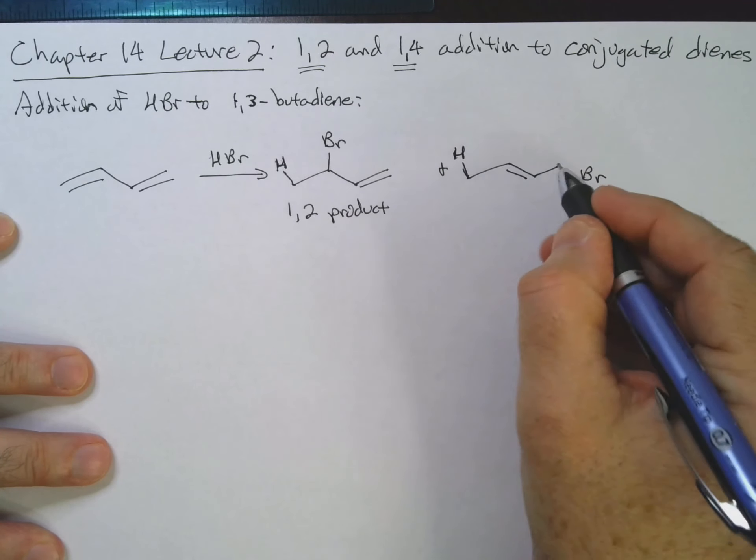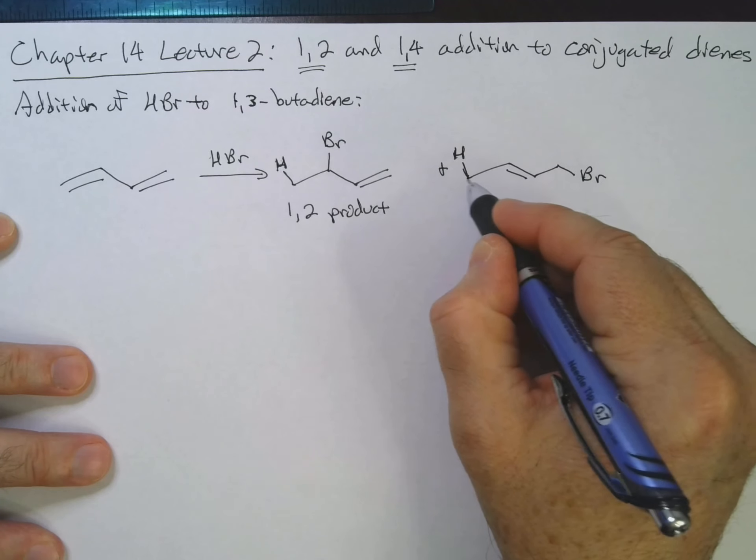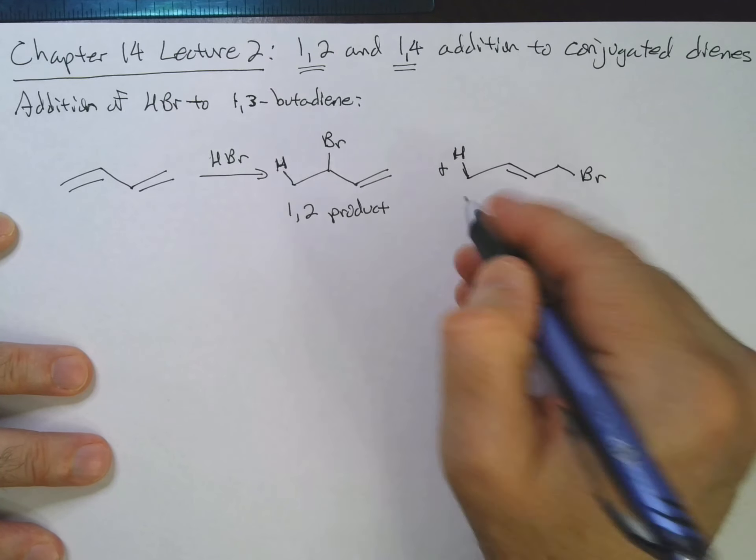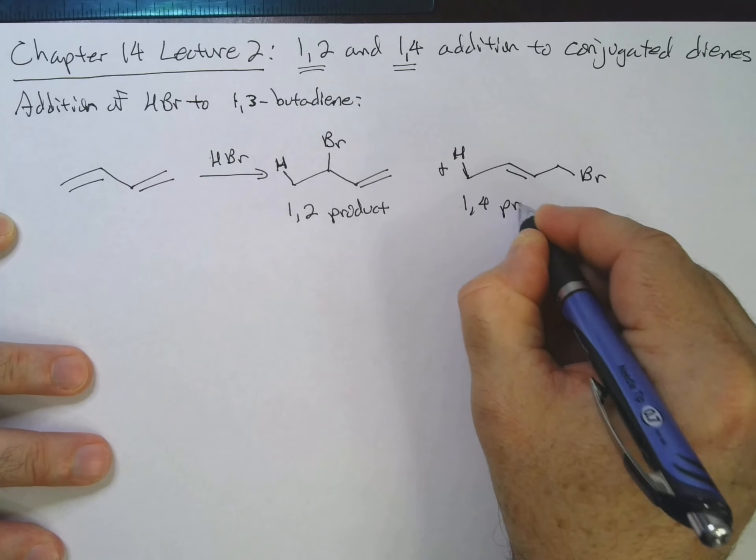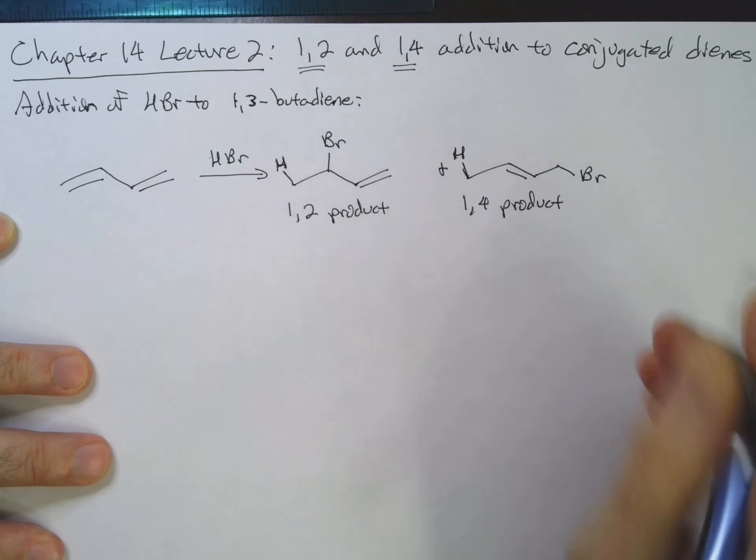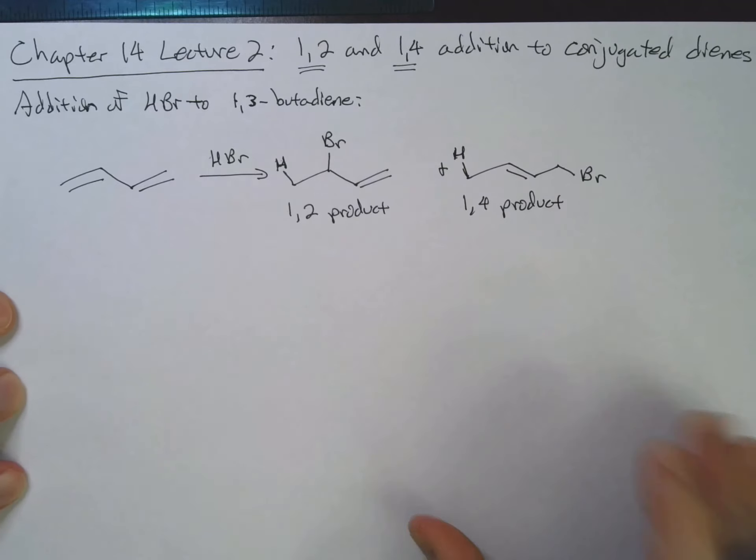Or we could get the H on carbon 1 and the bromine on carbon 4. So that's the 1,4 product. Now, the question is, how do we get these?